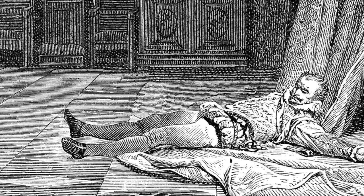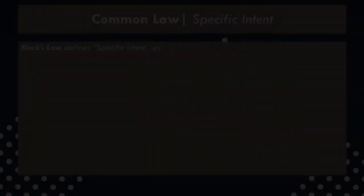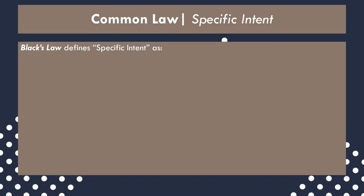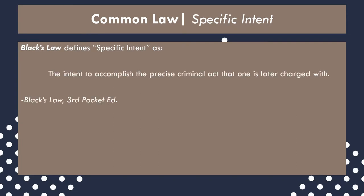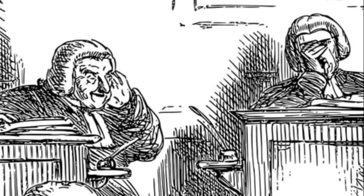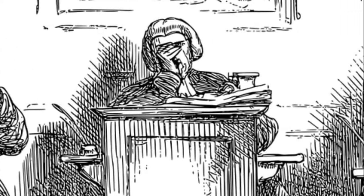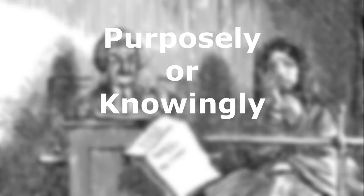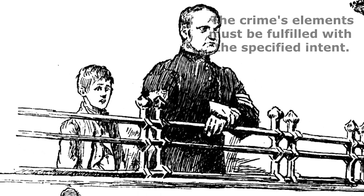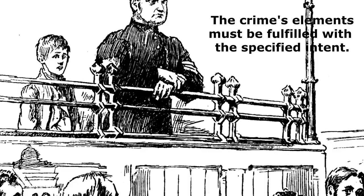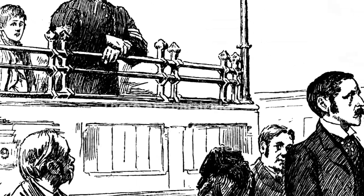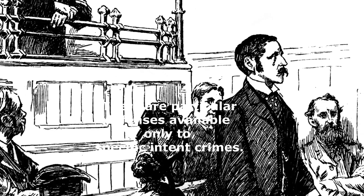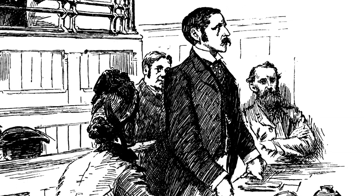Common law murder is a specific intent crime. Black's Law defines specific intent as: "the intent to accomplish the precise criminal act that one is later charged with." A specific intent crime's elements require that it be done with a specific state of mind or objective. The intent specified can span a wide spectrum, but usually the intent stated is purposefully or knowingly. Specific intent matters for two reasons: one, the intent described in the crime's elements must be present for liability to attach; and two, specific intent crimes can be rebutted with defenses specific to those types of offenses.